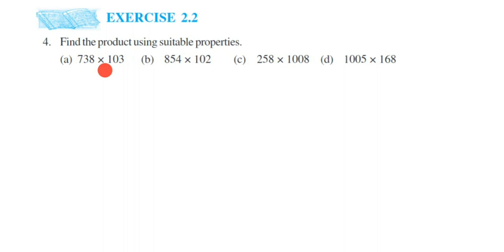Distributive property means if you have a × (b + c), you distribute it: a gets multiplied with b (opening the bracket), so it's a × b. There's a plus sign, so we put plus, and then a gets multiplied with c. This is called distributive property, and we're going to use this to solve these questions.